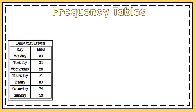This first frequency table is a frequency table with digits. The data or the frequency is represented with numbers in standard form. You can see that the title tells us this is about miles driven per day. The day and the miles are labels — in this column each day is listed, so I have miles on Monday, Tuesday, Wednesday, and so on. Monday had 30 miles driven, Tuesday had 32 miles driven.